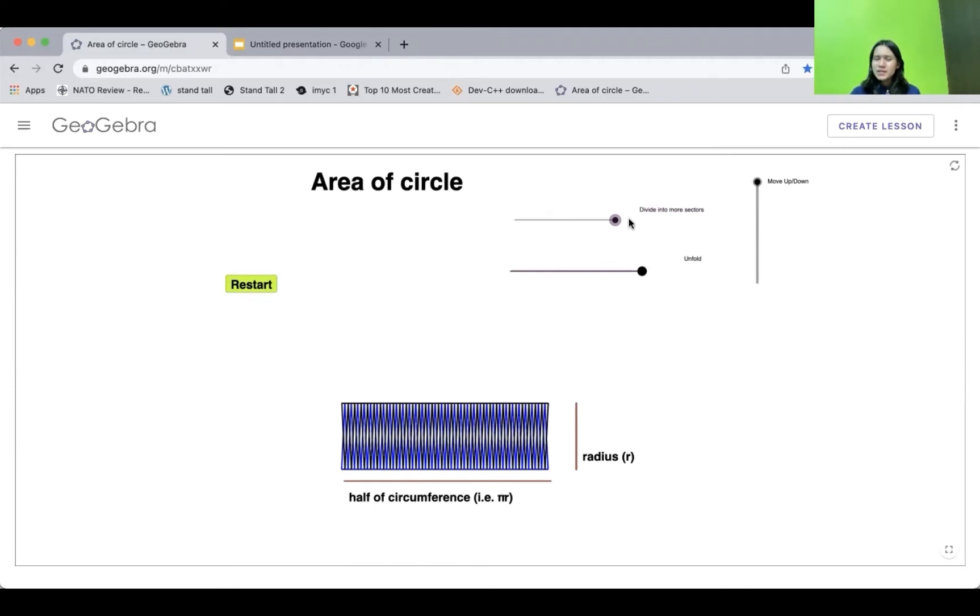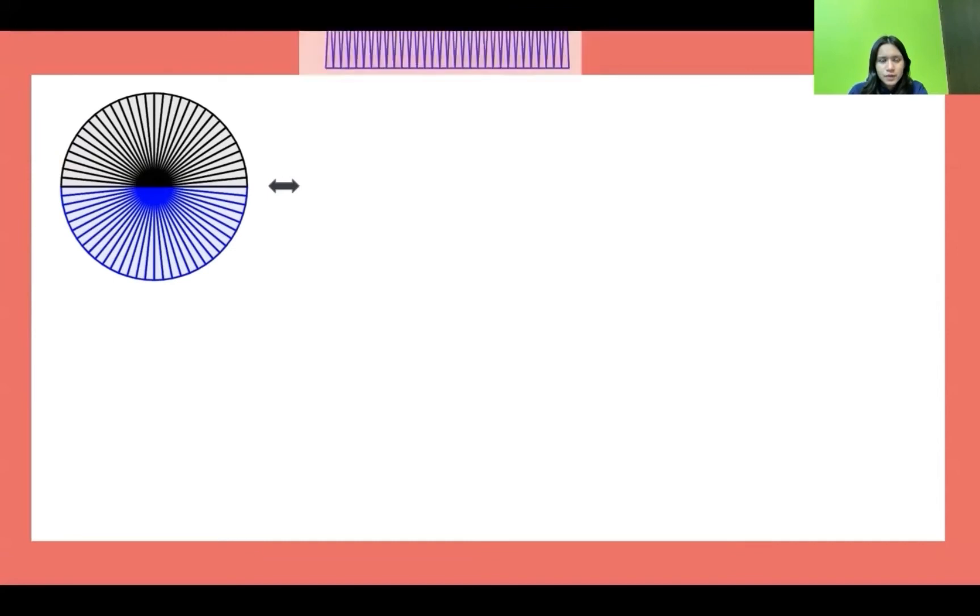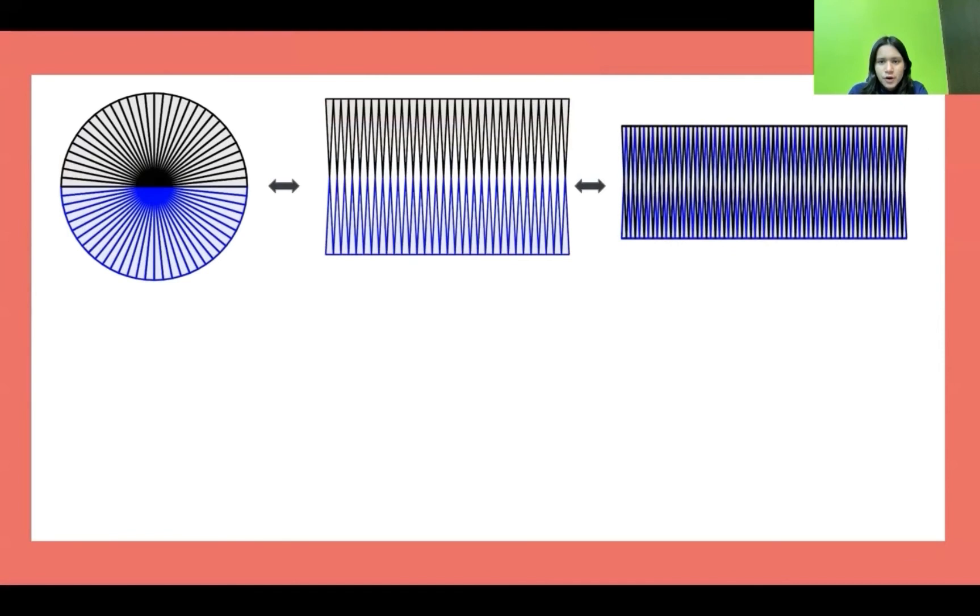By keeping this thing in mind, we'll observe some more examples and derive the area of circle. So here we can see the circle is divided into different many infinite parts. And again, when we unfold it and reassemble it like we did before, then here we can see the parallelogram.